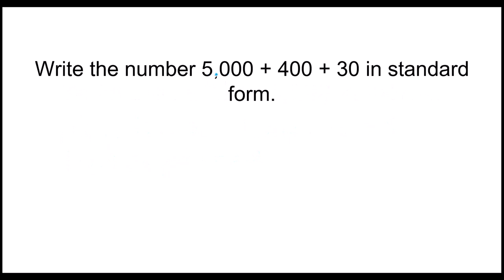Write the number 5,000 plus 400 plus 30 in standard form. I can write out my 5,000 and actually add 400, add 30 to that. Zero plus zero plus zero, that's zero. Three plus zero plus zero, that's three. Four plus zero is four and 5,000. So in standard form, it would look like this: 5,430.